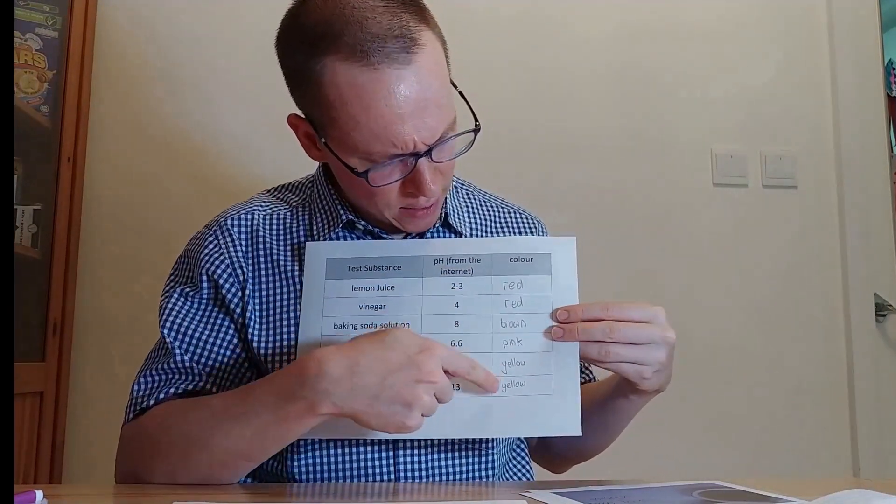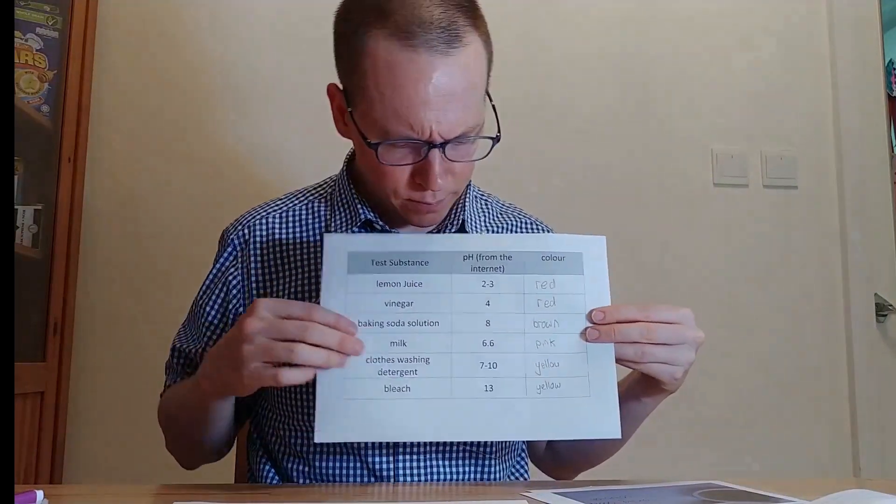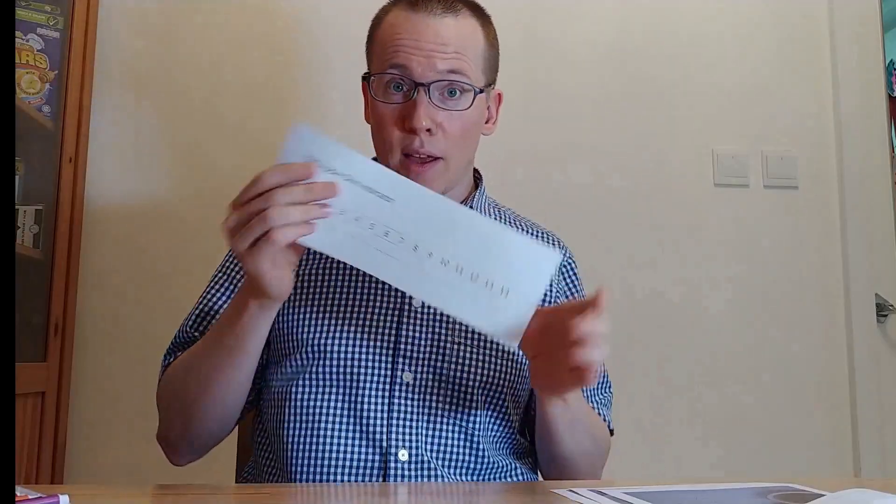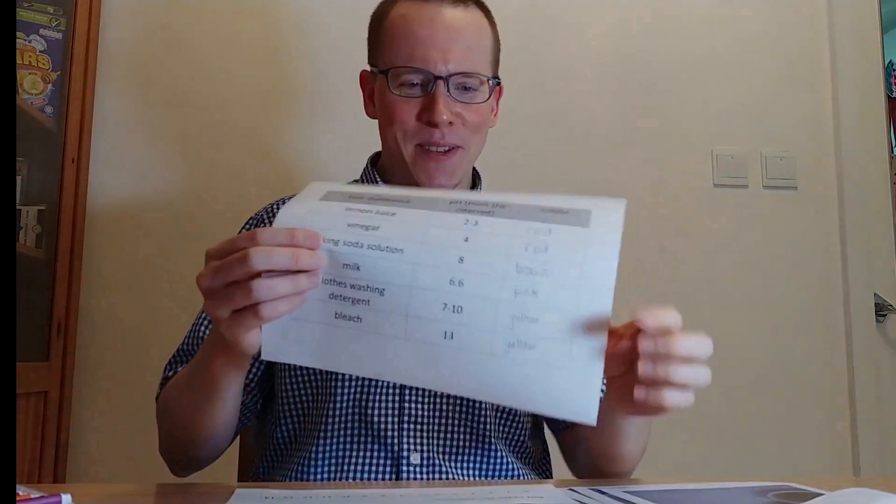The colors are really difficult so I just wrote basic colors: red, red, brown, pink, yellow and yellow, although one of them is quite a brownie yellow. But anyway now I'm going to try and color in my pH chart here based on the numbers that I got off the internet and the colors in my pictures.